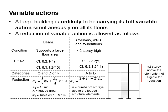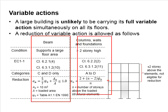To ensure the structure remains safe, there are several conditions for the reduction of variable actions. These conditions are basically divided into two types of structural elements: the beam, and the columns, walls, and foundations.